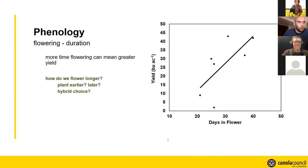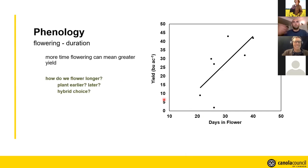What about flowering? The duration of flowering — we always hear that more time in flower can mean greater yield, and that was actually observed in the fields we looked at this summer. As the duration of flowering increased, so did yield. So how do we get canola to flower for longer? Do we plant earlier, try to shift that window into cooler temperatures? Does this have to do with hybrids? What about seeding rates? I'm going to have more questions than answers — I'm more of a question guy.